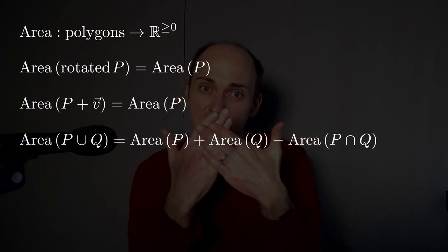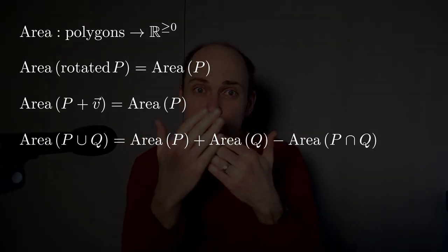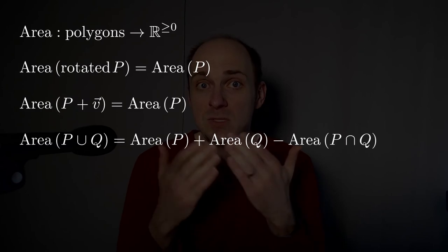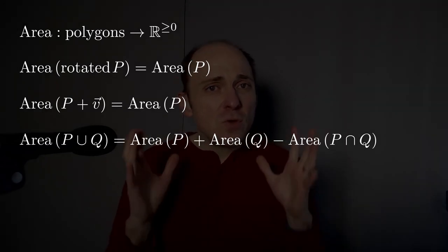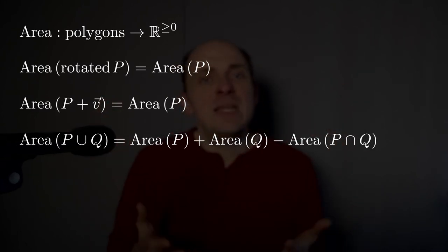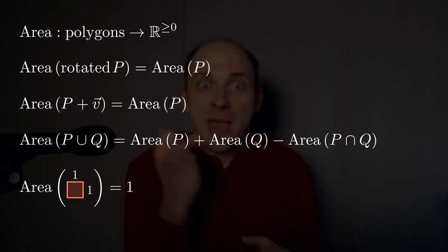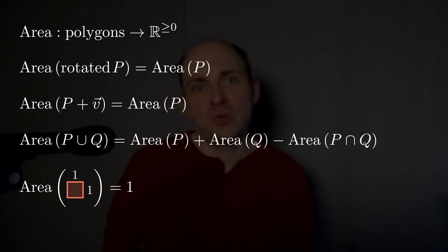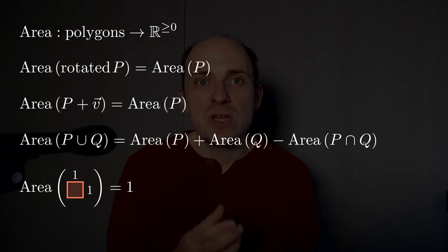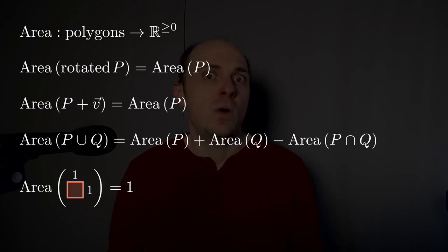The area of a union of two things should be the area of the first thing plus the area of the second thing, and then subtract the area that you double count, the intersection of those two things. Are those axioms enough to characterize area? Well, definitely not, because we're missing some kind of normalization. The area has to be pegged to some basic unit that we're measuring. We could do that by saying that the area of a unit square, the one by one square, is defined to be equal to one.